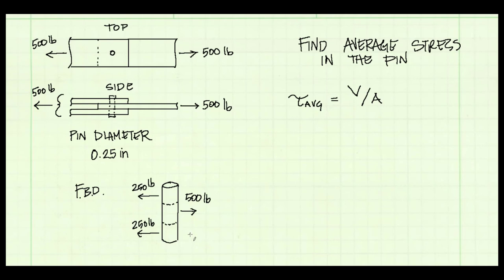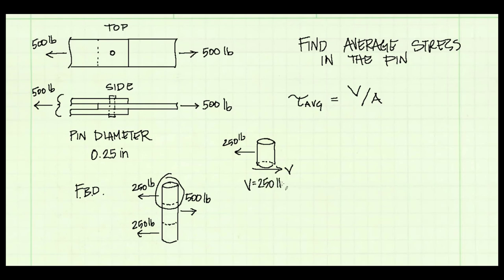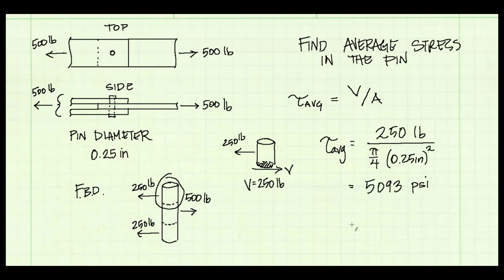The pin is in static equilibrium. Cutting through the pin and drawing a free body diagram of the top third shows a 250-pound force, so the shear force V equals 250 pounds. Taking V = 250 pounds divided by the cross-sectional area of the pin gives an average shear stress of 5,093 psi, which can also be written as 5.09 ksi.